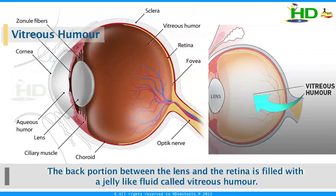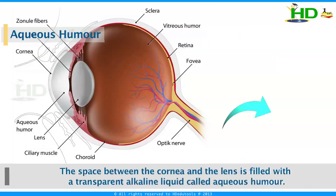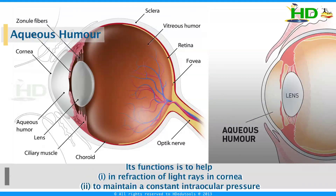The vitreous humor is found in the back portion between the lens and the retina, filled with a jelly-like fluid. The vitreous humor forms one of the refractive media of the eye and prevents the eyeball from collapsing due to changes in atmospheric pressure. The aqueous humor is a transparent alkaline liquid that fills the space between the cornea and the lens. Its function is to help in the refraction of light rays in the cornea and to maintain a constant intraocular pressure.